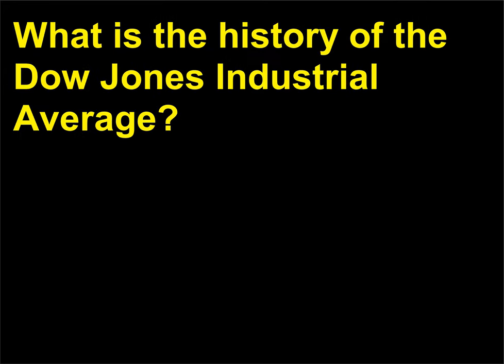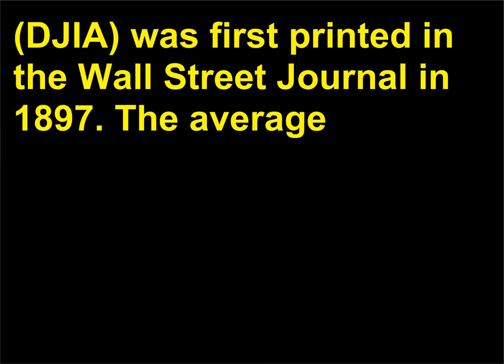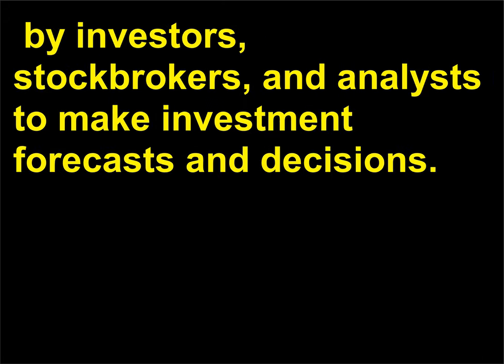What is the history of the Dow Jones Industrial Average? A measure of stock prices of important industrial companies, the Dow Jones Industrial Average — DJIA — was first printed in the Wall Street Journal in 1897. The average is an indicator of the market overall and is used, along with other indexes, by investors, stockbrokers, and analysts to make investment forecasts and decisions.